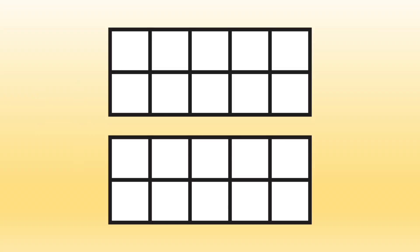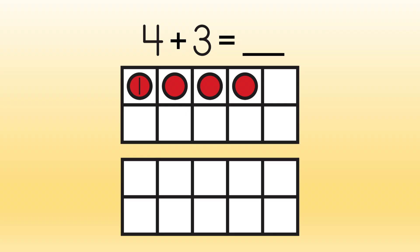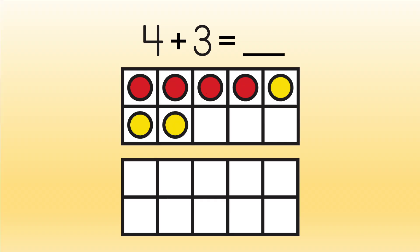So we start off and use counters to fill the top frame. We'll put four counters in our frame. One, two, three, four. Since we're adding, we'll put three more counters in the same frame. One, two, three. We can count the total number of counters to find our answer. We know we had four to start, so we can count up. Five, six, seven. So four plus three equals seven.